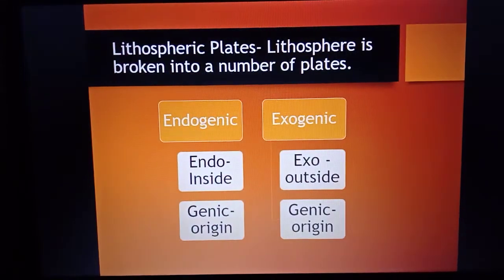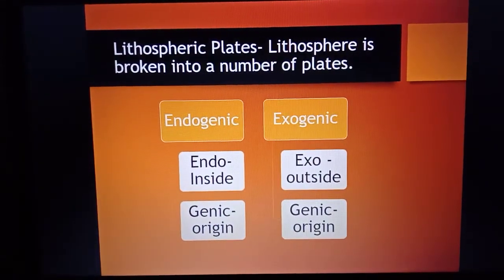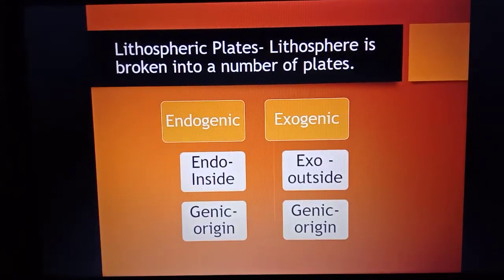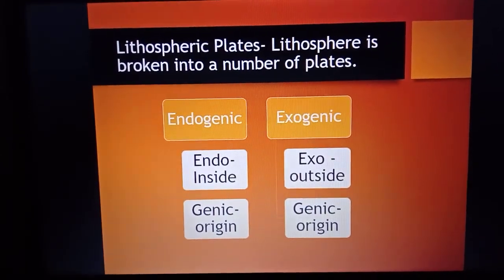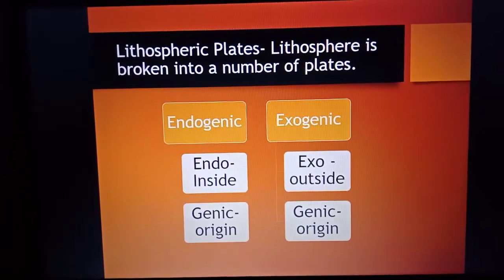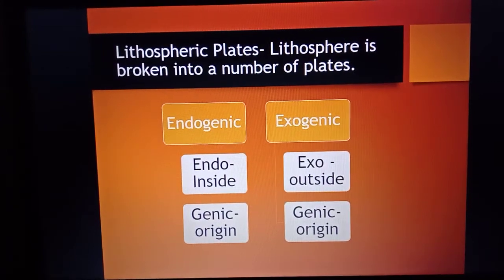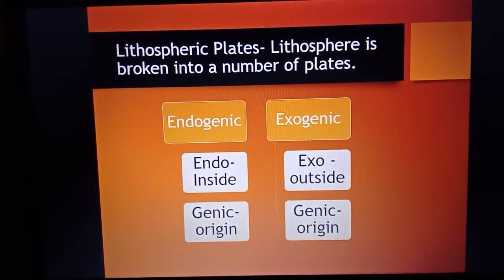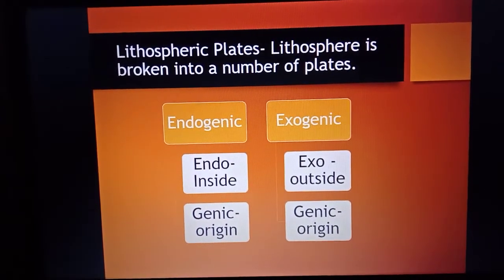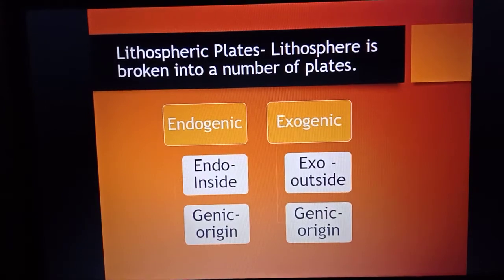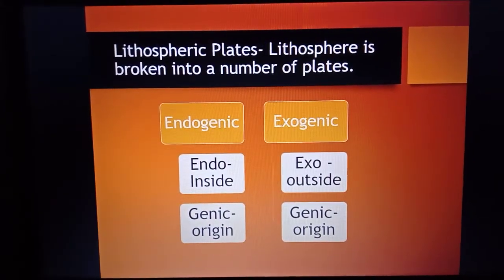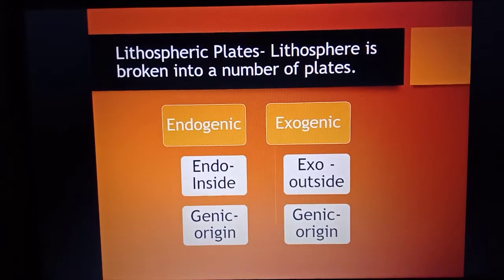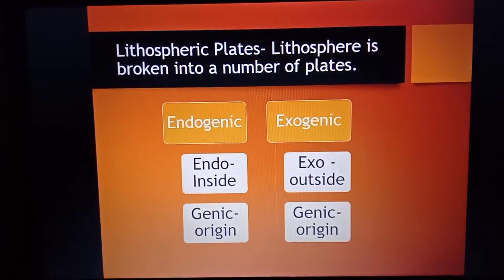The Earth's crust consists of several large, small, rigid, irregularly shaped plates, which are known as lithospheric plates. The movement of these plates causes changes in the interior as well as on the exterior of the Earth, known as endogenic and exogenic forces. Endogenic means inside, exo means outside, and genic means origin.